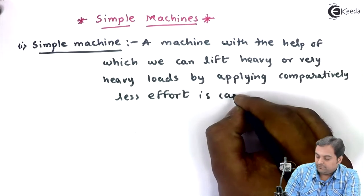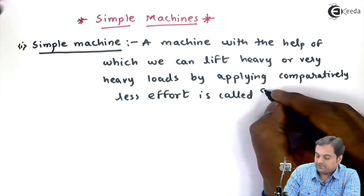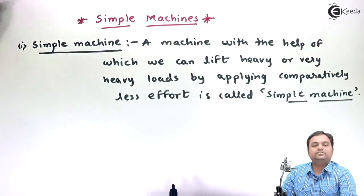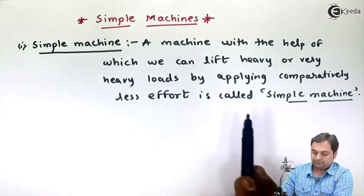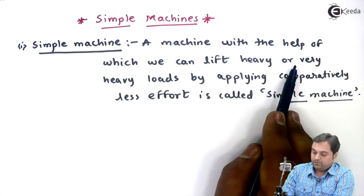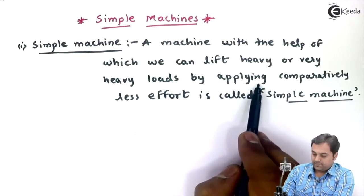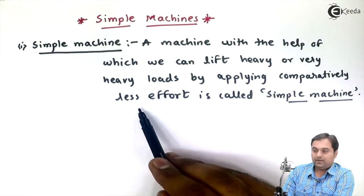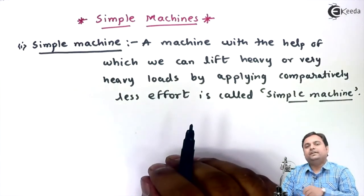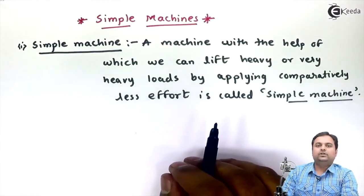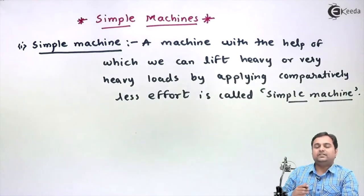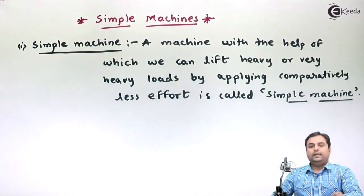This is called a simple machine. So here is the definition - a machine with the help of which we can lift heavy or very heavy loads by applying comparatively less effort. It is very clear that in case of simple machines, the effort which we apply is less and the load which we lift is more.